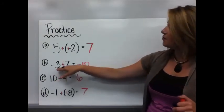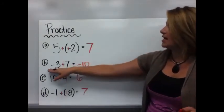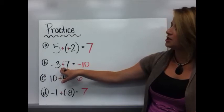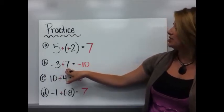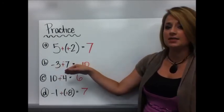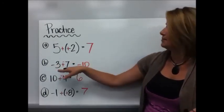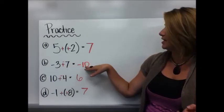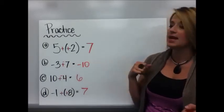Question B. Negative 3 minus 7. I keep negative 3, change subtraction to addition, and change 7 to its opposite, negative 7. Negative 3 plus negative 7, same sign, so I do the sum of its absolute values. 3 and 7 is 10, and I keep that sign so it's a negative 10.